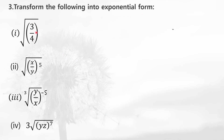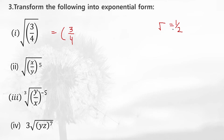Now look at question number 3: transform the following into exponential form. These are written in radical form and you have to convert them into exponent form — that means writing them with a power. The first question has only a square root. The value of a square root is 1 by 2. When you convert it into exponential form, 3 by 4 stays as the base and the power becomes 1 by 2.